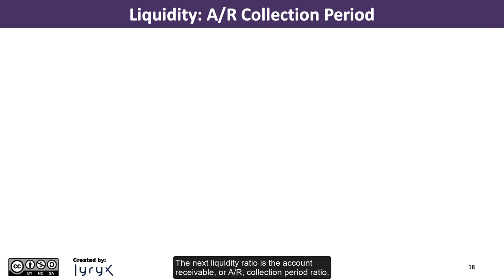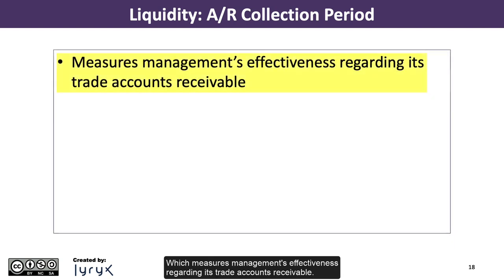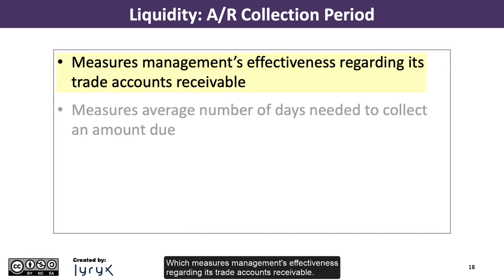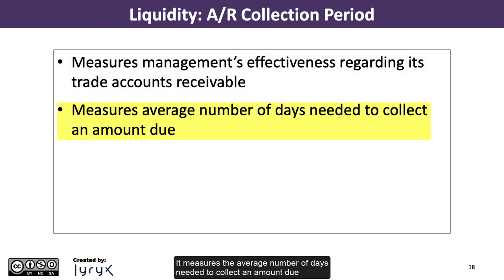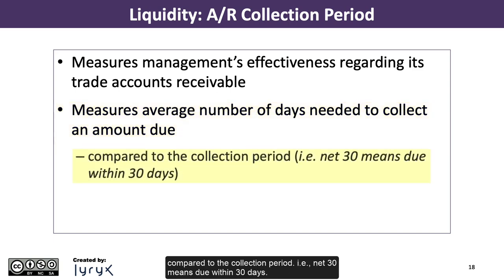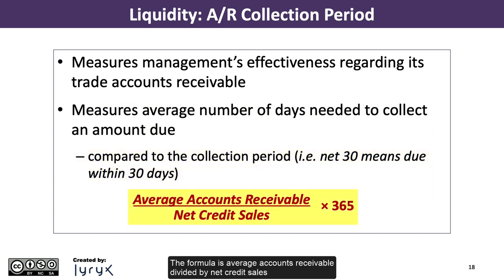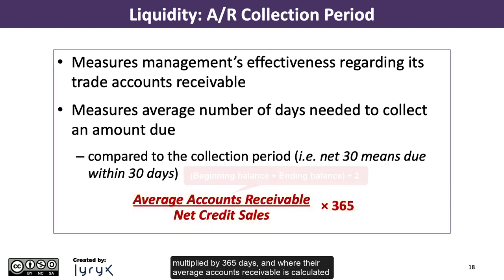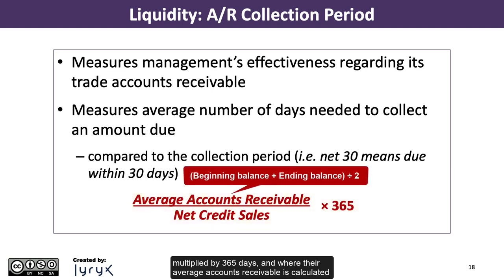The next liquidity ratio is the accounts receivable, or AR, collection period ratio, which measures management's effectiveness regarding its trade accounts receivable. It measures the average number of days needed to collect an amount due, compared to the collection period — for example, net 30 means due within 30 days. The formula is average accounts receivable divided by net credit sales, multiplied by 365 days, where average accounts receivable is the beginning-of-year balance plus end-of-year balance divided by 2.